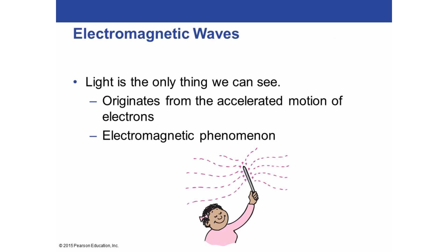For electromagnetic waves, light is the only thing that we can see in terms of electromagnetic waves. Normally we wouldn't see an electromagnetic wave, but when it's in the form of light we can actually see it. It originates from the accelerated motion of electrons. An atom has a nucleus with protons and neutrons in the center, and negatively charged electrons around the outside. These electrons moving quickly causes the light that we see.